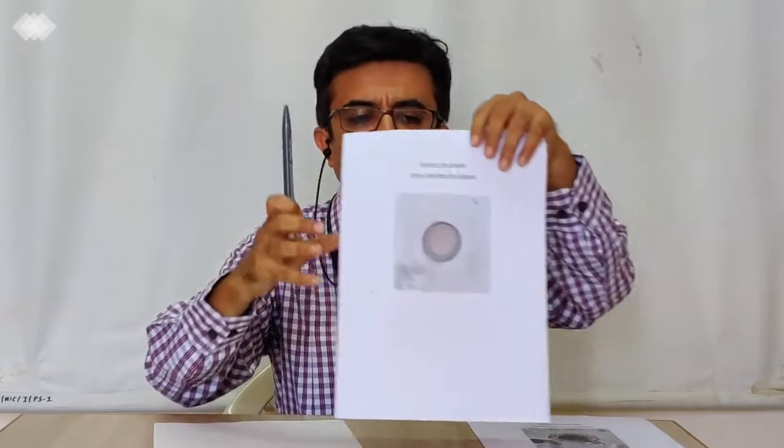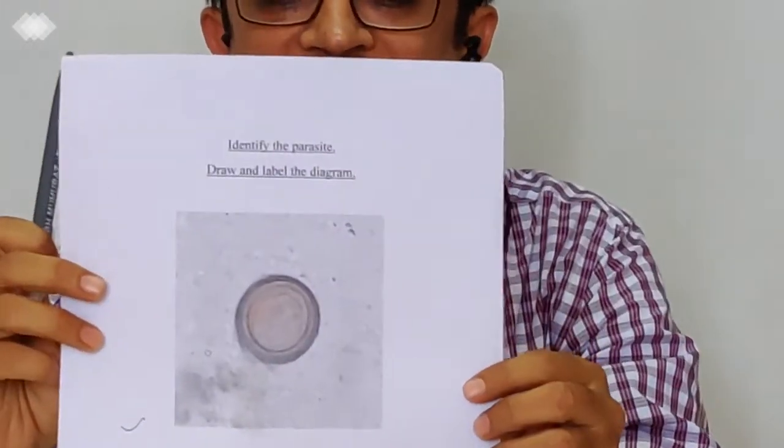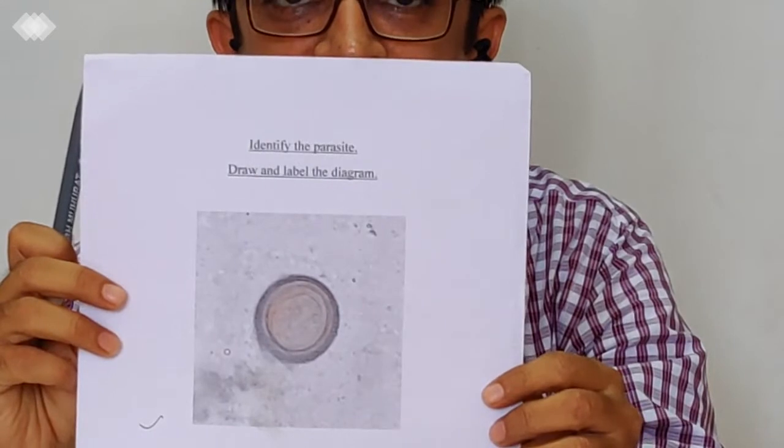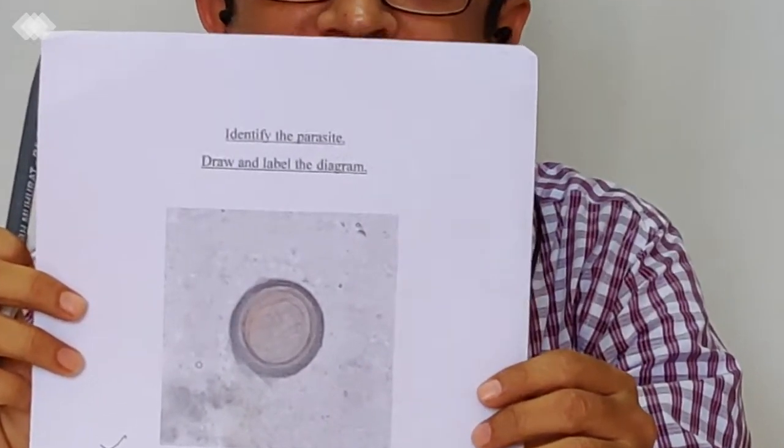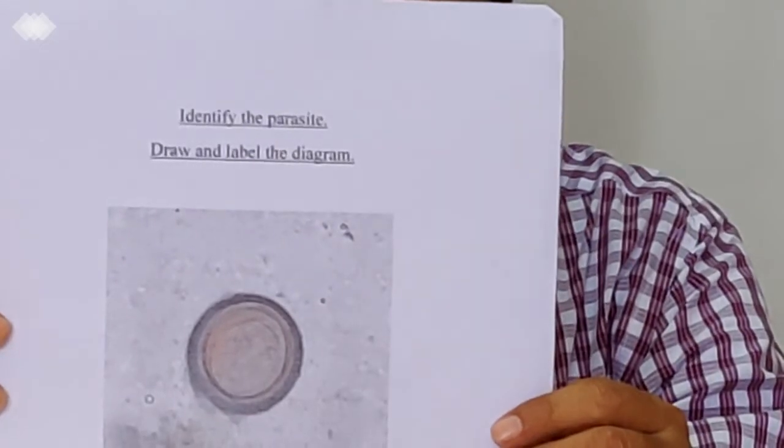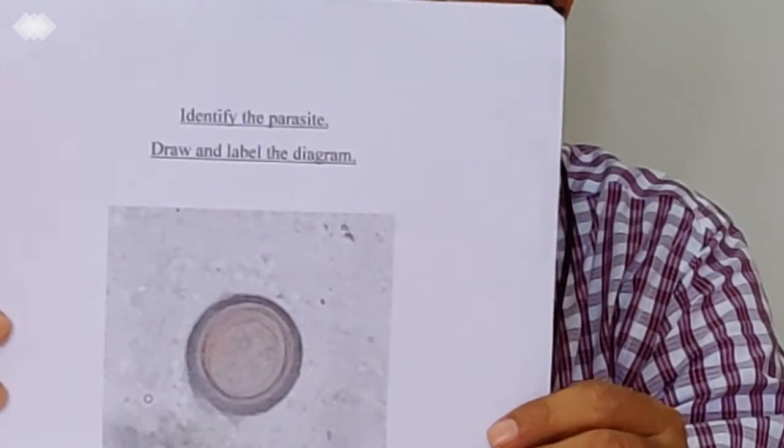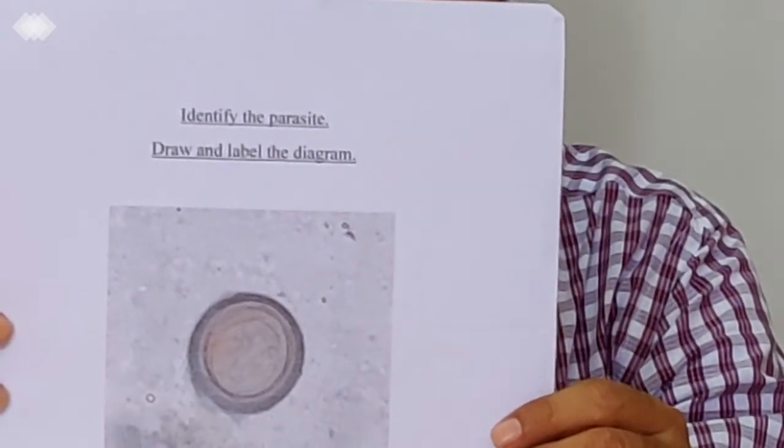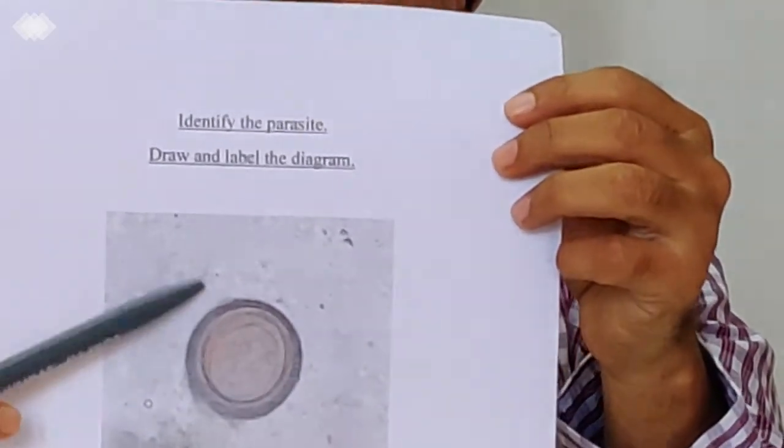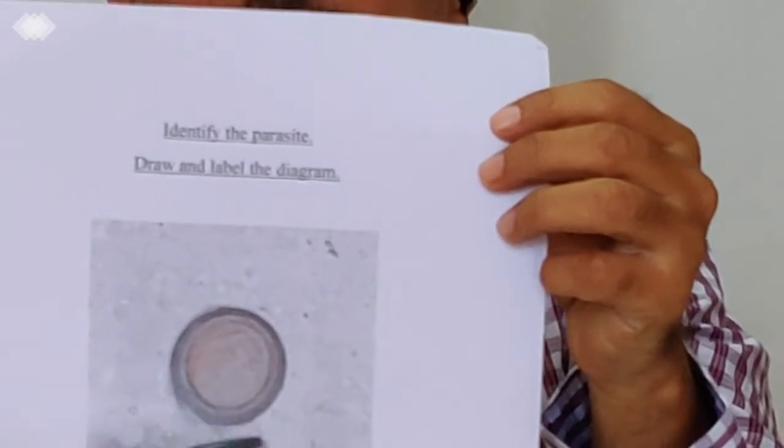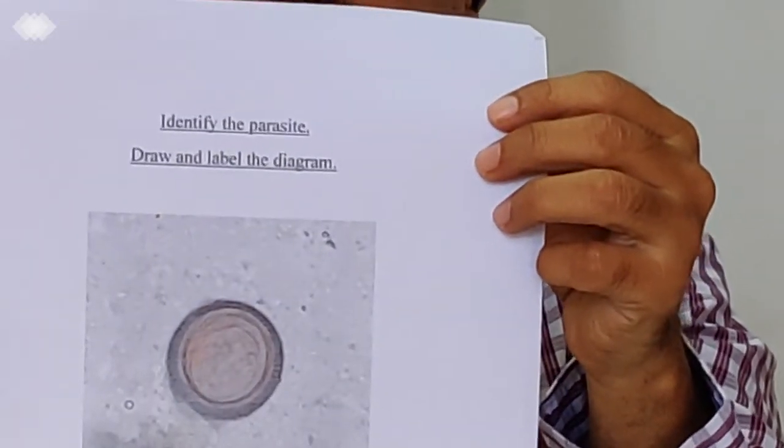Now, if we see one by one, the common eggs which we encounter. This is Taenia, the egg of Taenia. Here, by looking at the morphology of egg, you cannot discriminate between Taenia solium or saginata. Both would look same in that it would be bile-stained. There would be radial striation which would be visible in the high power of the microscope.